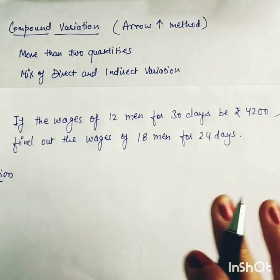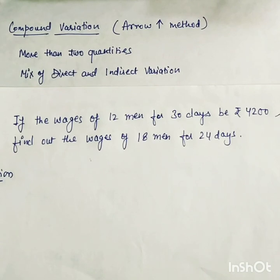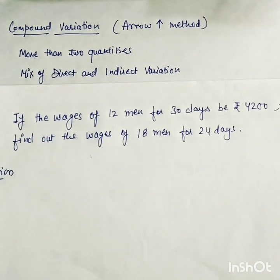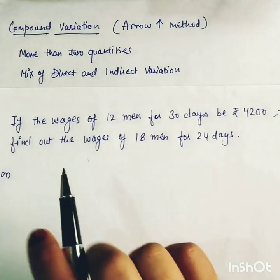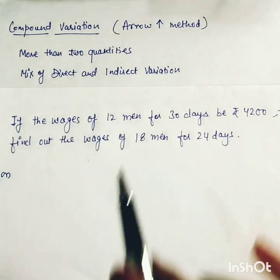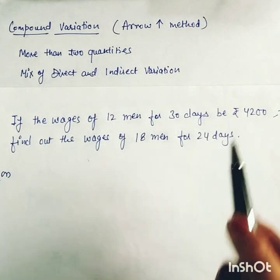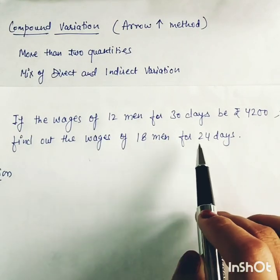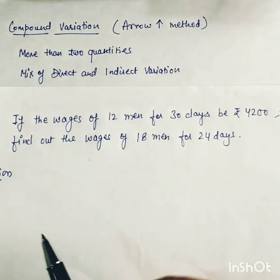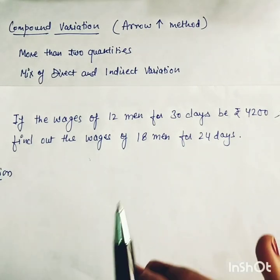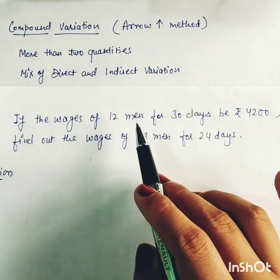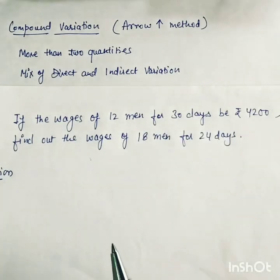So without any further delay, let's start. I am going to explain one example. In the first example: if the wages of 12 men for 30 days is Rs. 4200, then find out the wages of 18 men for 24 days. We have three quantities here: men, days, and wages.